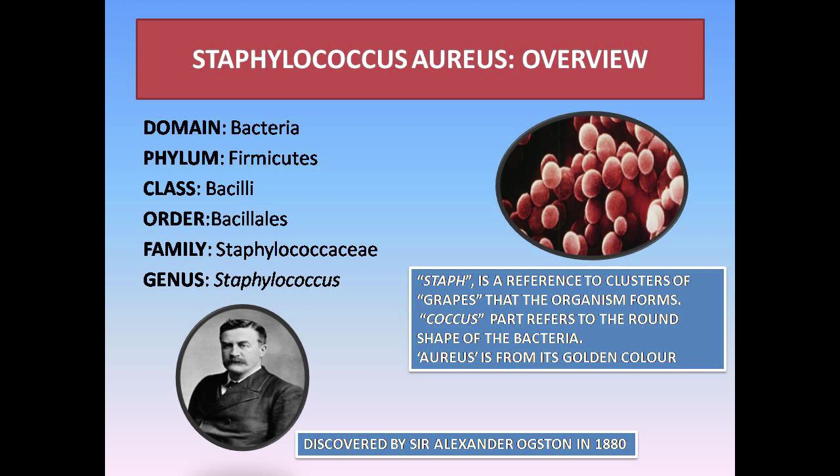Now let's discuss what Staphylococcus aureus means. Staphylococcus aureus is a reference to the clusters of grapes that the organism forms. The coccus part refers to the round shape of the bacteria, and aureus refers to its golden color.